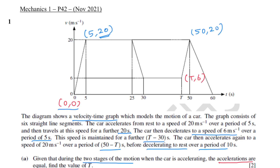Mechanics 1 Paper 4, November 2021, first question. The diagram shows a velocity-time graph modelling the motion of a car. The graph consists of six straight line segments. The car accelerates from rest to a speed of 20 meters per second over a period of five seconds, then travels at this speed for a further 20 seconds. The car then decelerates to a speed of 6 meters per second over a period of five seconds.